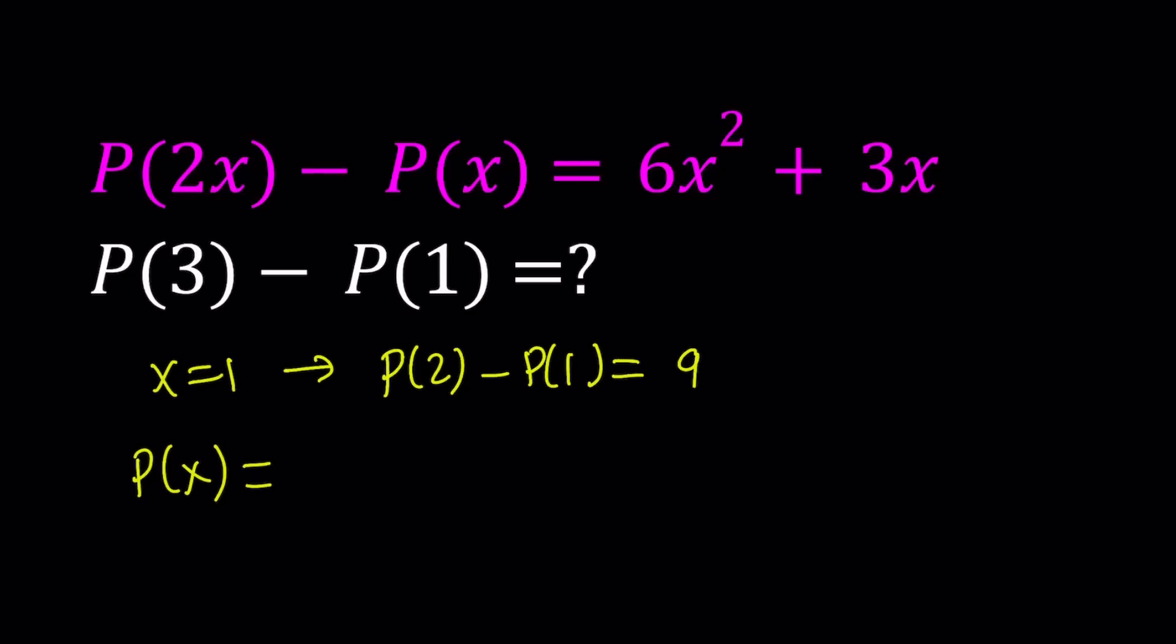in general are written like this. P of X is a sub n, x to the nth power plus a sub n minus 1, x to the power n minus 1, so on and so forth, all the way down to a sub 1 x plus a sub 0. So those are the coefficients, and we have the powers of X that are in descending order.